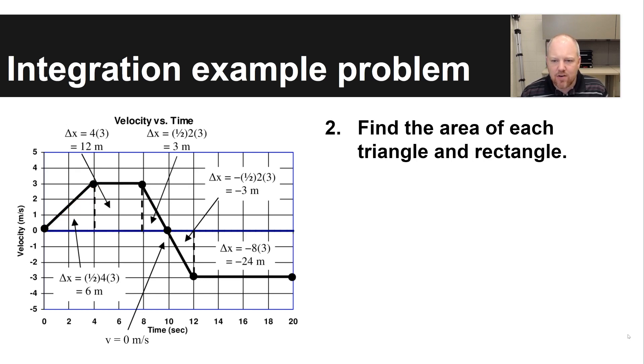Step number two, you're going to find the area of each triangle and rectangle. The area for each right triangle that we've got here is one half base times height. The area of each rectangle is just going to be length times width.